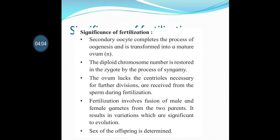Significance of fertilization: The secondary oocyte completes the process of oogenesis and is transformed into a matured ovum. The diploid chromosome number is restored in the zygote by the process of syngamy. When haploid gametes unite they give rise to a diploid zygote. The ovum lacks centrioles; the centrioles necessary for further divisions are received from the sperm during fertilization.